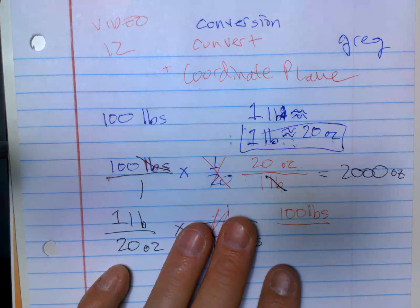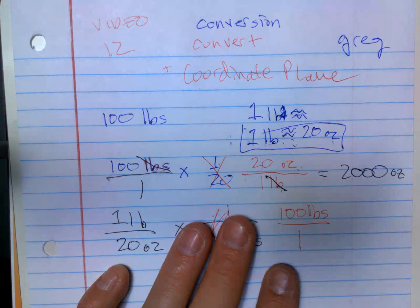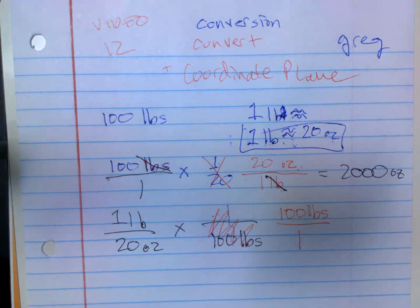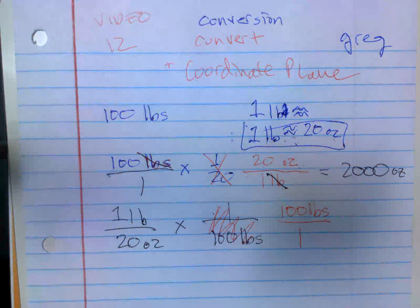If they give you 100 pounds, write it first. If they give you 13 something, write it first, then flip the conversion ratio. All right, let's look at coordinate plane.